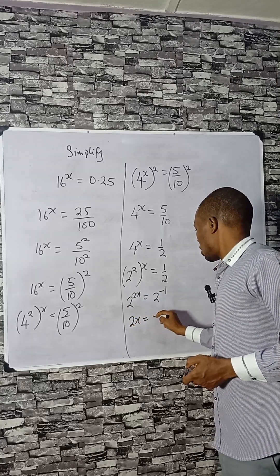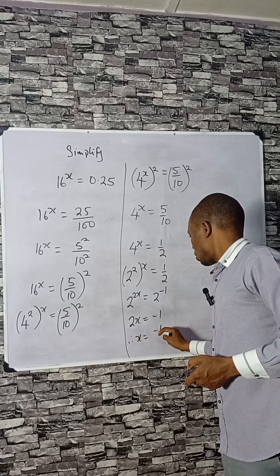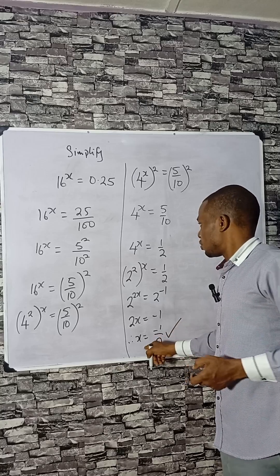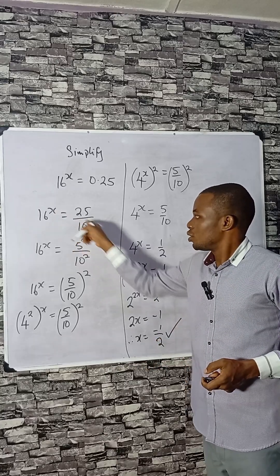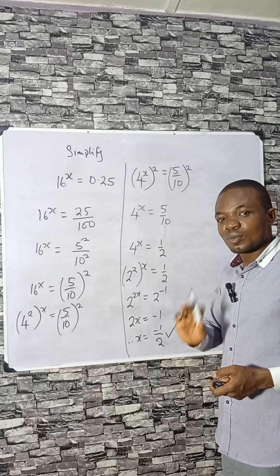2x equals minus 1, therefore x equals minus 1 divided by 2. This is the value of x. If you replace it in the original equation, you have this answer. Subscribe to this channel for more. Bye bye!